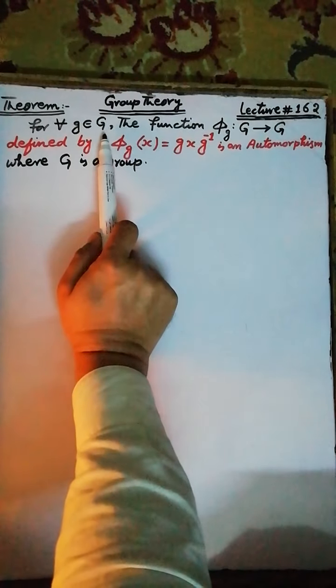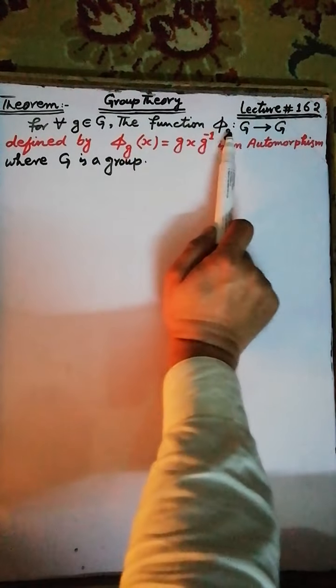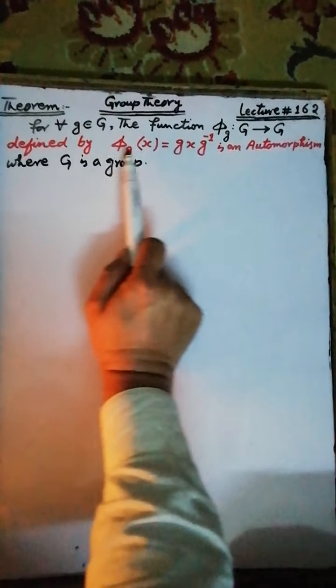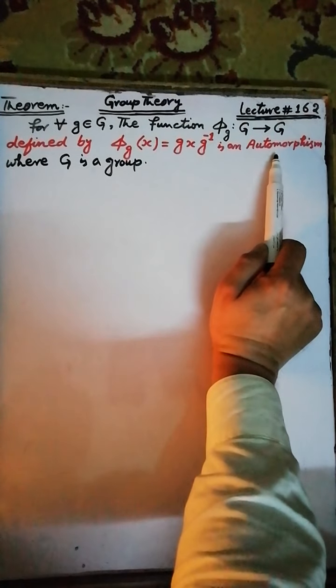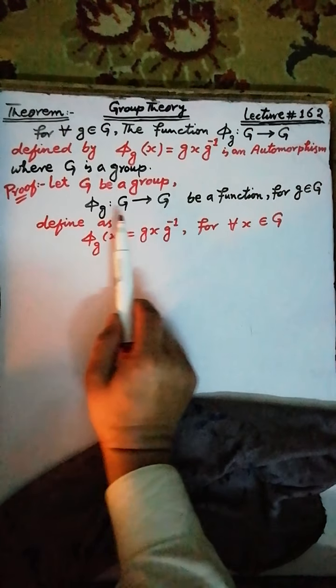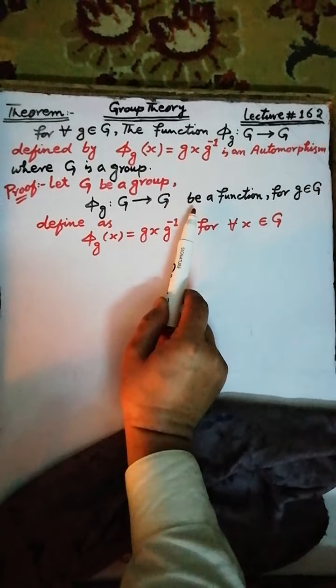Next theorem: for each g belonging to the group G, the function π(g) such that G tends to G, defined by π(g)(x) = gxg⁻¹, is an automorphism. Let G be a group and π(g) be a function from the group G to the group G. For an element g belonging to the group G, define the function π(g)(x) = gxg⁻¹ for an element x belonging to the group G.